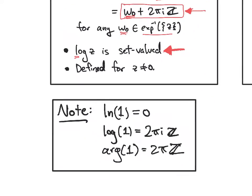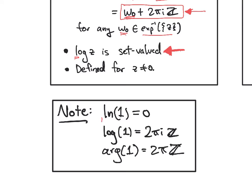Just a few quick notes. We'll reserve ln to refer to the natural log on the real numbers. So ln of x, for x positive, will be the usual natural log that we're used to from calculus.